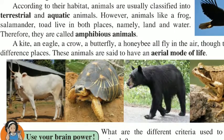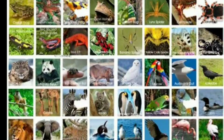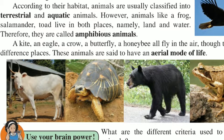Now let us see what terrestrial, aquatic, and amphibian animals are. According to their habitat, animals are usually classified into terrestrial and aquatic animals. However, animals like a frog, salamander, and toad live in both places, namely land and water. Therefore, they are called amphibian animals. A kite, an eagle, a crow, a butterfly, and a honeybee all fly in the air. Though they live in different places, these animals are said to have an aerial mode of life.